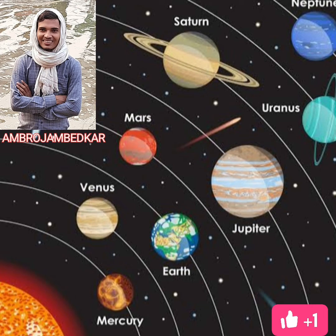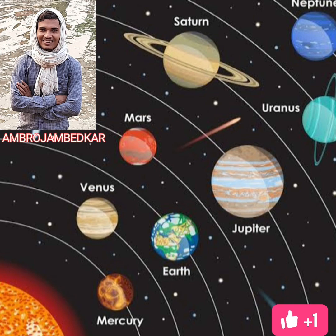The sequence of planets according to their distance from the sun is: Mercury, Venus, Earth, Mars, Jupiter, Saturn, Uranus, and Neptune. The sequence of planets according to their size in descending order (big to small) is: Jupiter, Saturn, Uranus, Neptune, Earth, Venus, Mars, and Mercury. Jupiter is the biggest and Mercury is the smallest planet in our solar system.